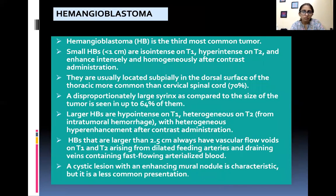Hemangioblastoma is the third most common intramedullary tumor. Small hemangioblastomas are iso-intense on T1, hyper intense on T2, and enhance intensely and homogeneously after contrast administration. They are usually located in the dorsal surface of the thoracic cord, more common than cervical spinal cord. A disproportionately large syrinx compared to the size of the tumor is seen in up to 64% of cases.